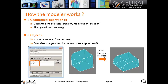For the object entity: one object can correspond to one or several Flux volumes, and the object contains the geometrical operations applied to it. For example, if we create a block and apply a fillet on it, then edit the object, you will see two geometrical operations: the block creation and then the fillet creation.